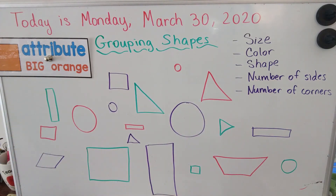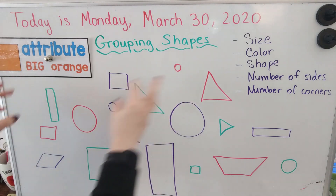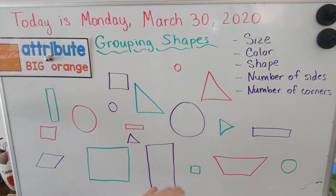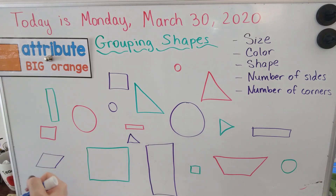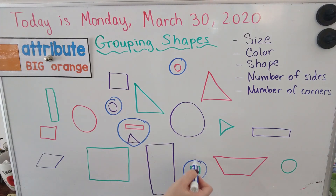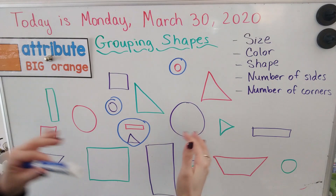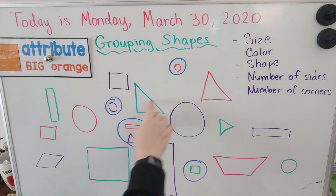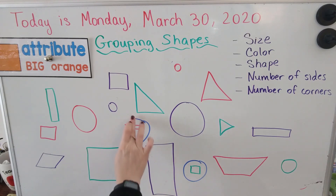If we look at all the shapes on the board and we said let's group them and find all of the ones that are small and put them together, we could move the shapes around. Since these are drawings, I'm going to circle the shapes that I'm talking about. So if I wanted to sort them by size and I said let's put all the small ones together, I would circle all of the small shapes and put them in a group. Those would be my small shapes. Then I would make another group of the medium-sized shapes, and then another group of the large-sized shapes. So that would be making groups using size, sorting the shapes according to how big and how small they are.